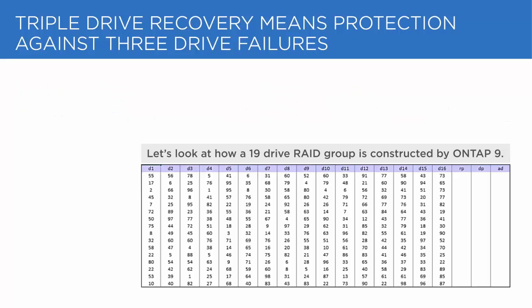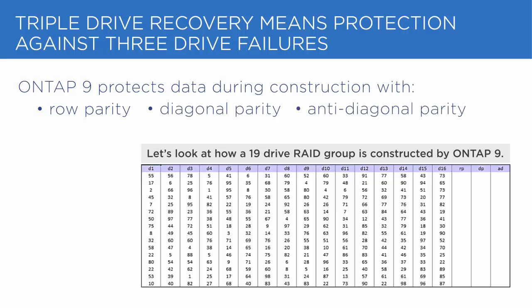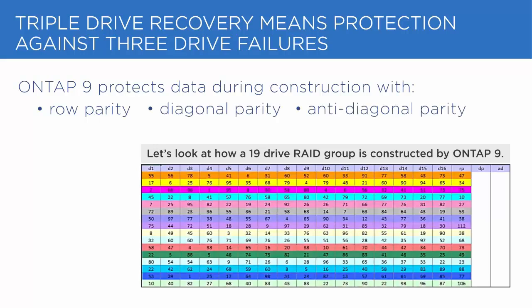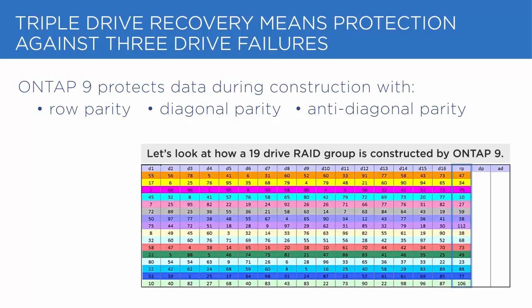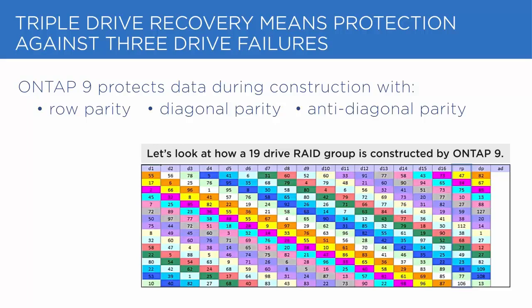Now let's do a simulation of RAID-TEC. ONTAP stores parity information on separate parity drives in a RAID group. In this 19-drive simulated RAID group, we see parity blocks being calculated and stored. This happens automatically as part of every write operation.